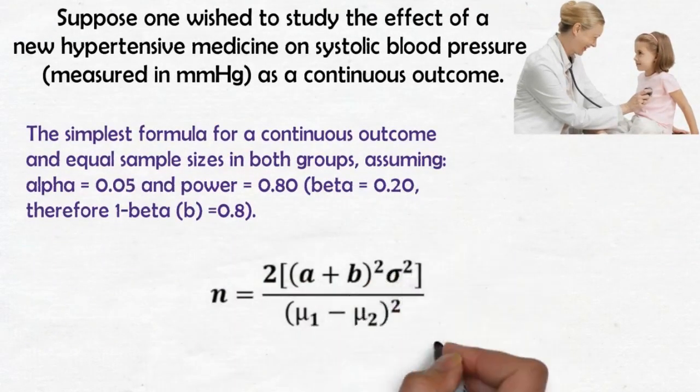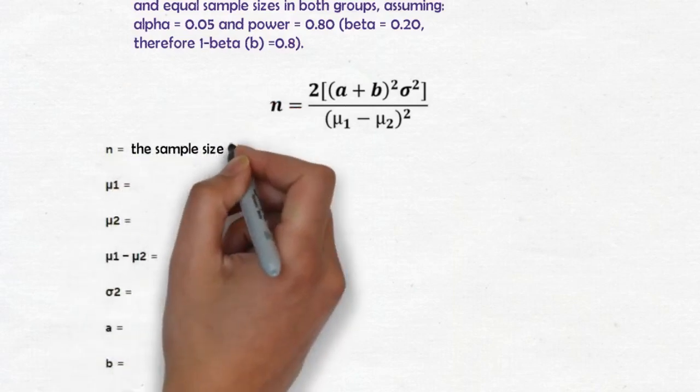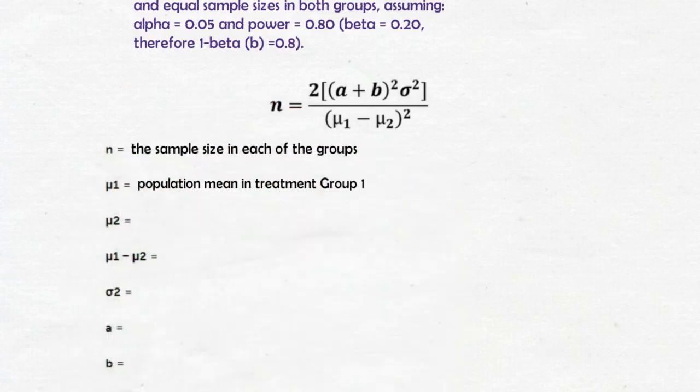The formula for this will be n equals... where mu1 equals population mean in treatment group 1, mu2 equals population mean in treatment group 2.